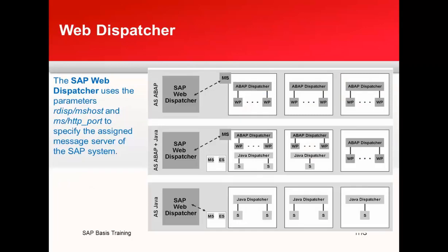The next slide shows how the Web Dispatcher communicates with the message server in a pure ABAP system, in an ABAP plus Java system, and in a pure AS Java system — how it contacts the respective message server and forwards the request. It uses two parameters: MS host (rdisp/ms_host) and the second is icm/server_port_HTTPS, specified for an AS Java system.